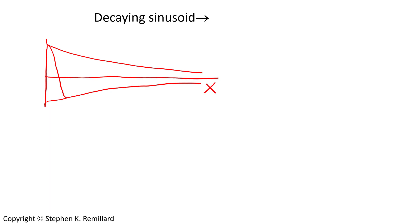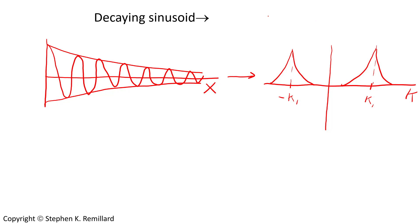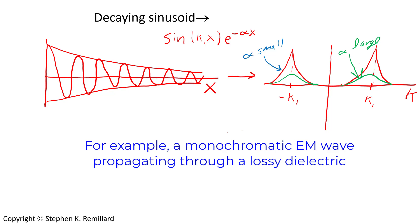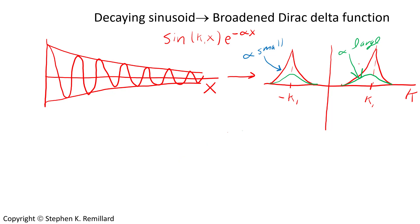A little modification to the sine wave is the sine wave that decays. How is this different from a pure sinusoid? Besides the fact that we gave it a starting point at x equals zero, the decay adds components to that cosine, and it shows up in the Fourier transform as a broadening of those delta functions. How broad it gets depends on how quickly it decays. If I describe the sinusoid as e to the minus alpha x times the sine wave: if alpha is very small, you essentially have the sine wave; but if alpha is very large, this becomes even more broadened and squat. A good example would be a monochromatic electromagnetic wave propagating through a lossy dielectric medium. So a decaying sinusoid is a broadened Dirac delta function.